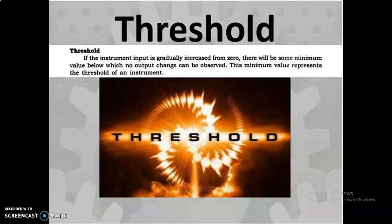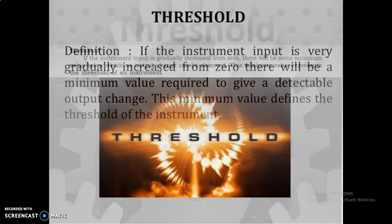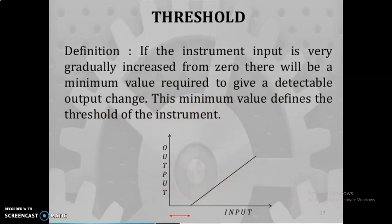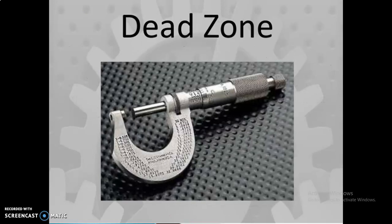Threshold means whatever the minimum value is below which no output change can be observed — you can only observe it after some time. When the instrument input is very gradually increased from zero, there will be a minimum value required to give a detectable output change. Looking at the graph, the red line shows a change but you can't identify it at the initial point — that is the threshold.